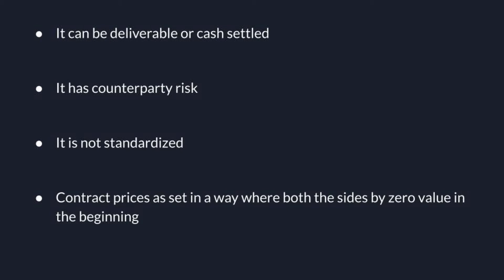When talking about forward contracts, there is a counterparty risk — it's possible that three months from now you might say you're not paying or delivering the wheat at the pre-determined price because the price has increased. That is a drawback of forward contracts. It is us who decides how much quantity we want, at what price, and for how much duration. Also, always remember that the contract price is set in such a way that the value of the forward contract at the beginning is always zero — neither party has a positive or negative value at inception.